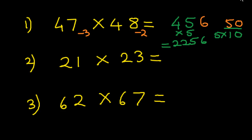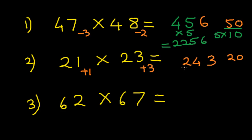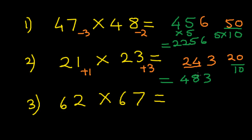Let's take another example: 21 × 23. In this case our base is 20. So when we subtract we get plus 1 and plus 3. Plus 1 into plus 3 gives you 3. And 20 plus 3 gives you 23. Now again we have to multiply this number by 2, because our real base is 10 and 20 is 2 times 10. So we multiply 23 by 2 to get 46, and the units digit 3 stays as is. Therefore the answer is 483.